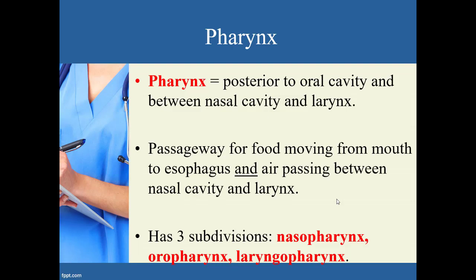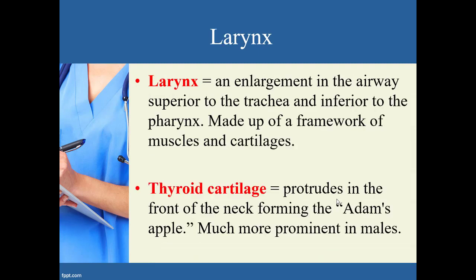The larynx is an enlargement in the airway that is superior to the trachea and just inferior to the pharynx. It's made up of a complex network of muscles and different types of cartilages, but we'll only talk about two of those cartilages specifically by name.